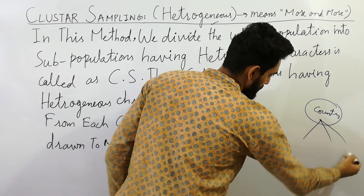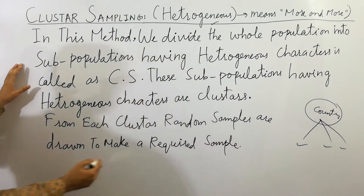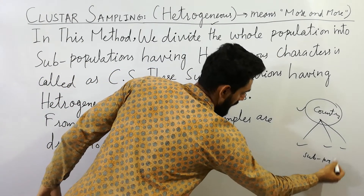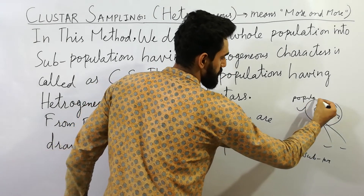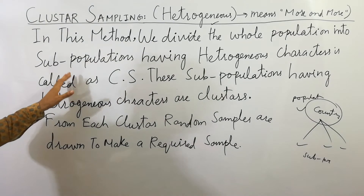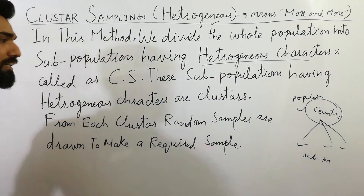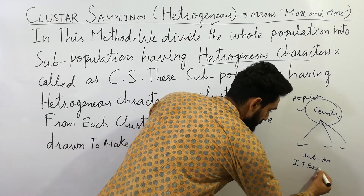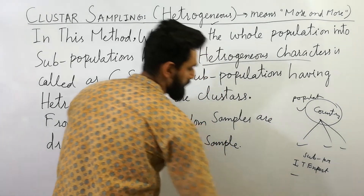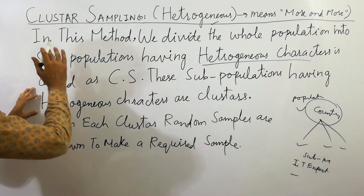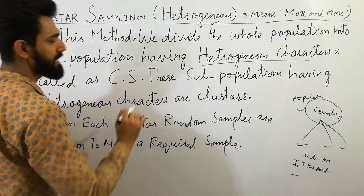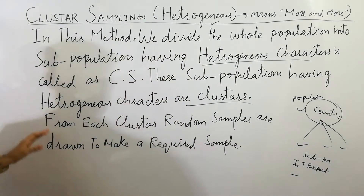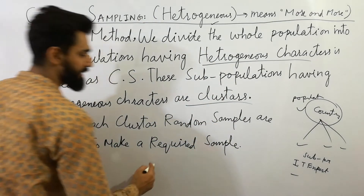In this method, we divide the population into subpopulations — these are the subpopulations and this is the population. We divide the whole population having heterogeneous characters — more and more characters, more and more specialties. These subpopulations having heterogeneous factors are called clusters. From each cluster, random samples are drawn to make our required sample.